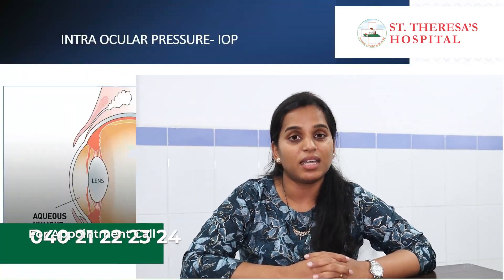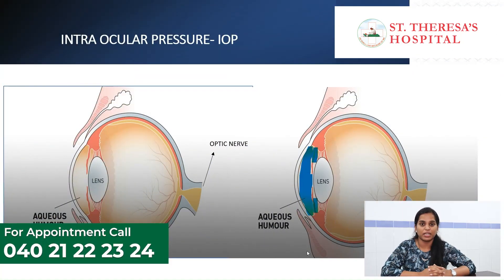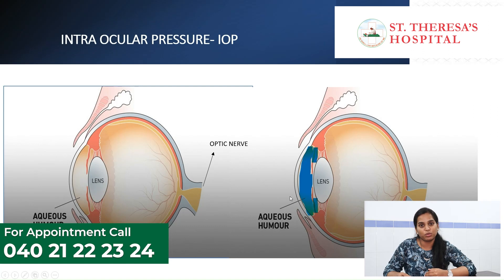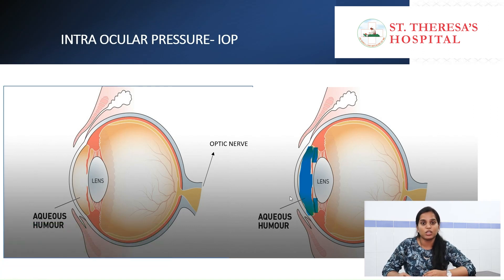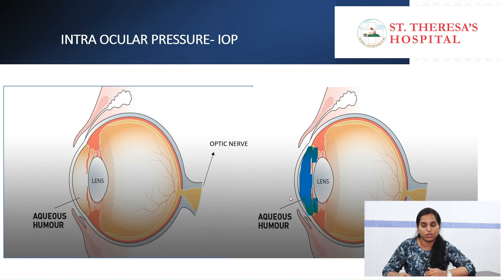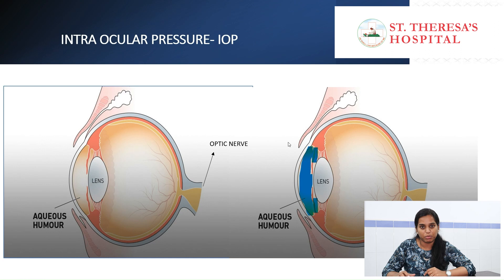We are going to talk about basic and important terms. Intraocular pressure — in the eyes, when you look at the image, it has a chamber. The fluid and water structure is the aqueous humor. It will drain continuously. In the chamber, there is a constant pressure, and that means it is intraocular pressure.